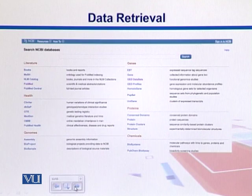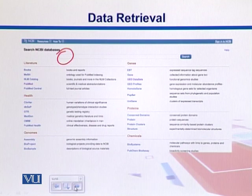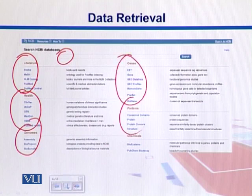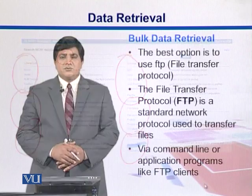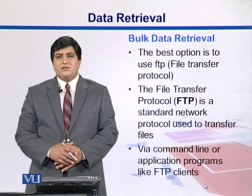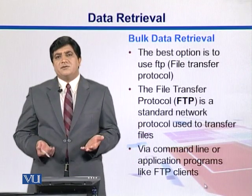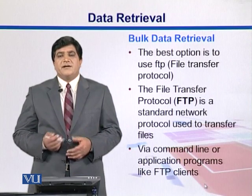Here is the Entrez page. You can put whatever you want to search in this box, and there are different connections which are available. We have literature resources, health databases, genomes, different gene databases, proteins, and chemicals. Sometimes we need to get the data in bulk amount, and FTP is a good way in which we can get that data.